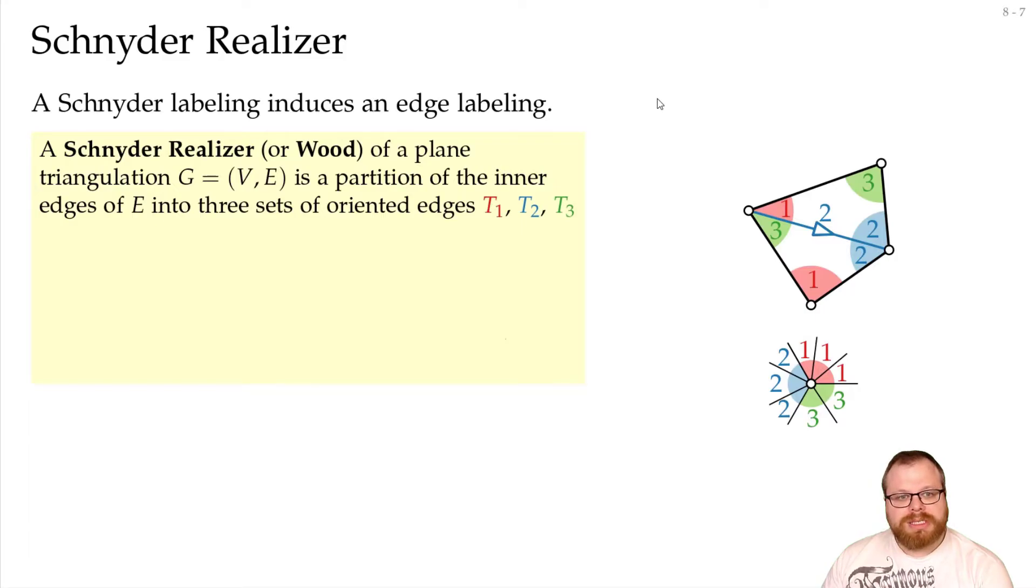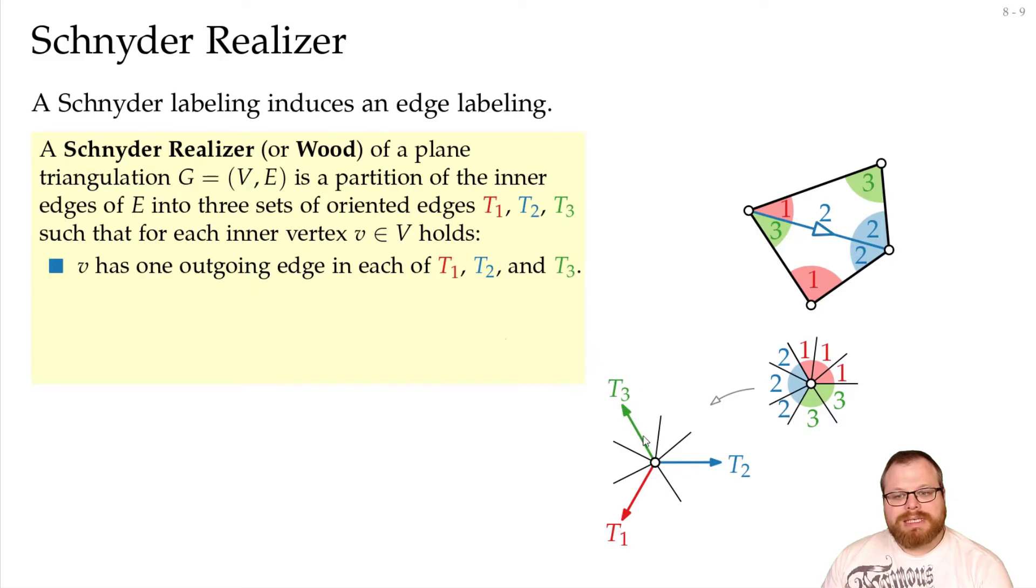if one property holds for every interior vertex. So, let's look at the labels here again. We have these three stops, where we jump from a 1 to a 2, from a 2 to a 3, and a 3 to a 1. At each of them, on the other side, there must be the same label. So, this one must go somewhere where both labels are 3. This must go somewhere where both labels are 1. This must go somewhere where both labels are 2. So, we have exactly one outgoing edge for each of these labels in our oriented labeling.